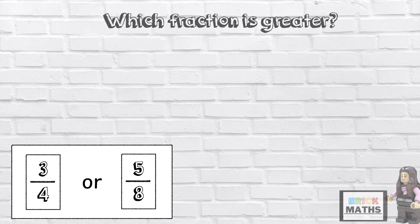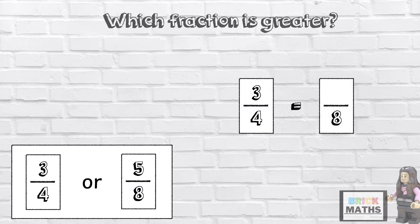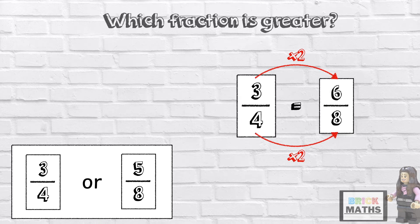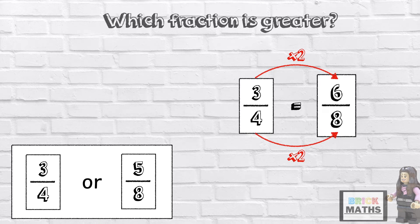In order to compare them, we need to make the denominators the same. But how can we do that? We can use equivalent fractions. You remember how to find an equivalent fraction — the numerator and the denominator should be multiplied by the same number. So if I multiply 4 by 2 to make 8, I need to multiply 3 by 2 as well. 3 times 2 is 6.